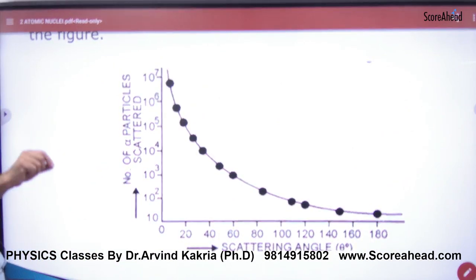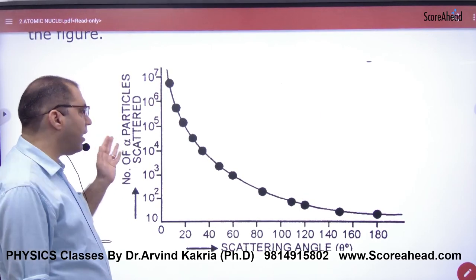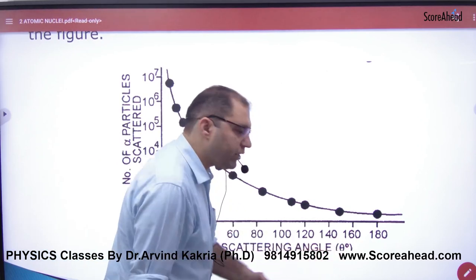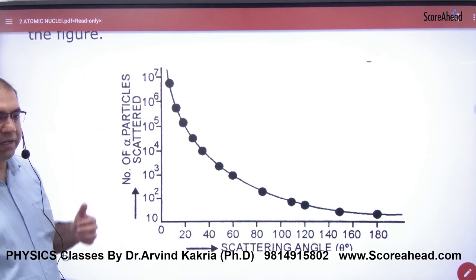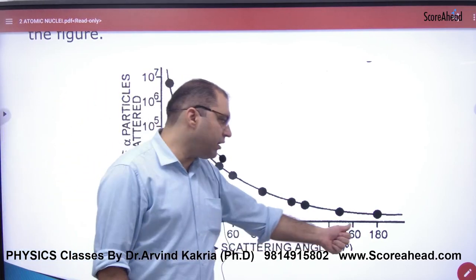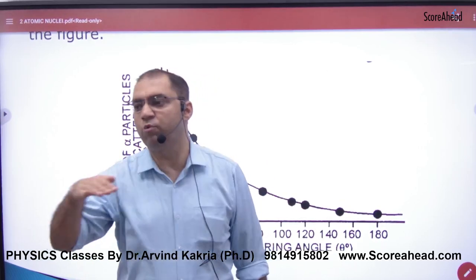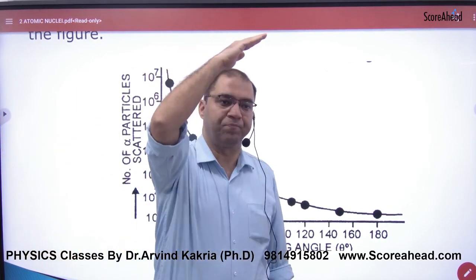Let's take this graph. What is this graph? Number of alpha scattered particles with respect to scattering angle theta. One more thing. Scattering angle - if it is high, then the number of alpha particles is very low. And the angle that is straight out, they are going to be more.